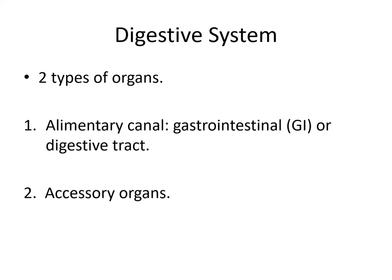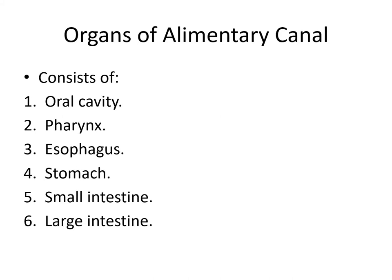The digestive system can be divided into two types of organs. We have the alimentary canal, also known as the gastrointestinal or GI or digestive tract, and the accessory organs. The organs of the alimentary canal include the oral cavity or mouth, the pharynx or throat, the esophagus, stomach, small intestine, and large intestine.